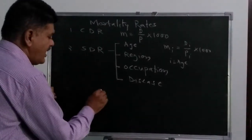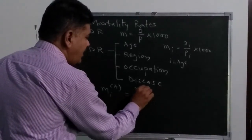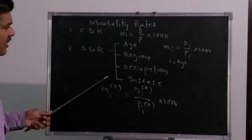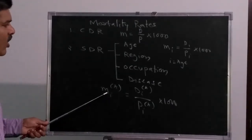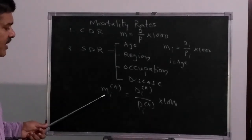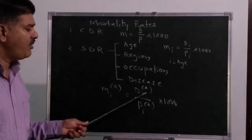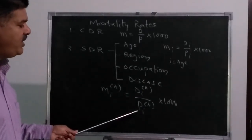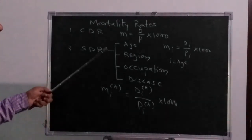We can denote this combined rate as MiA. MiA = DiA divided by PiA multiplied by 1000. In this formula we are combining both age group and region group. MiA is the mortality rate of a particular age group i in region A. For example, the mortality rate in Kolapo district for age group 15 is calculated by taking total deaths in Kolapo district of age group 15 divided by the total population of Kolapo district in that age group, multiplied by 1000.